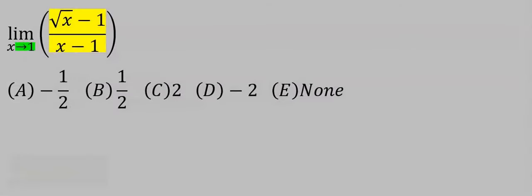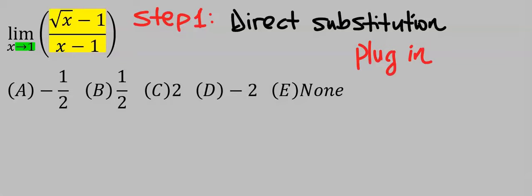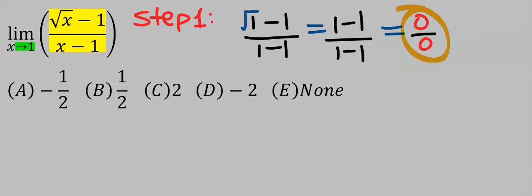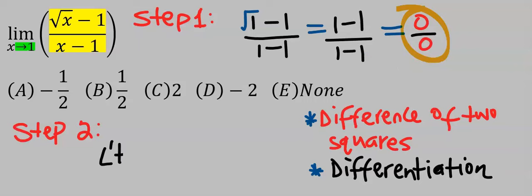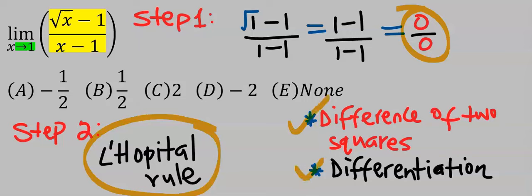Consider this question. Step number one: apply direct substitution — that is, plug in — and we have zero over zero. Step number two: apply L'Hôpital's rule, and here we have two options.